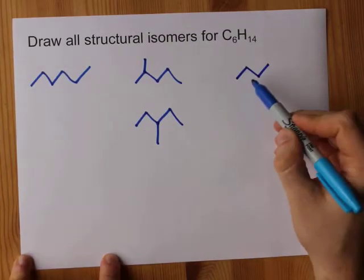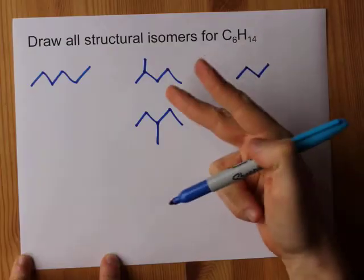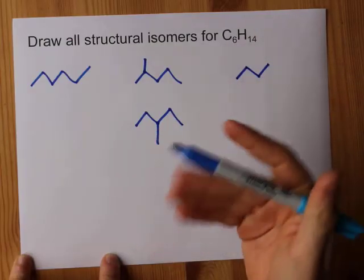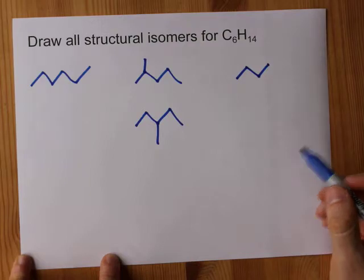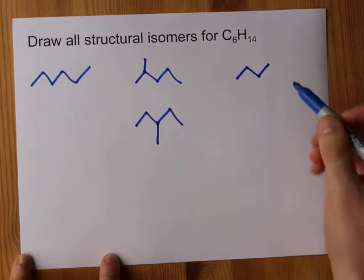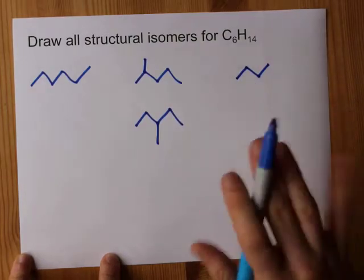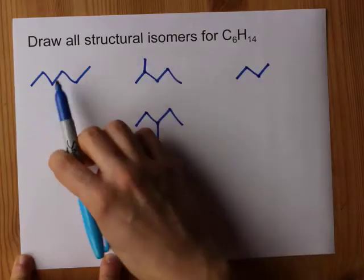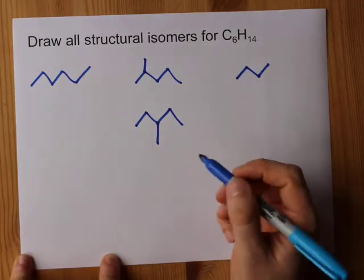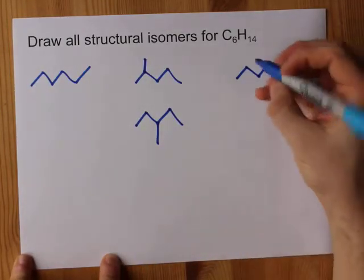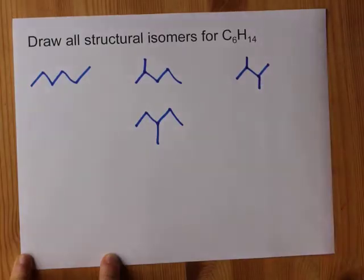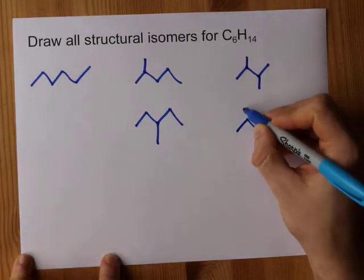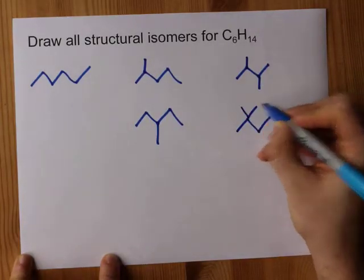What about my butanes, where I've chopped off two of the carbons? I still have two that I need to accommodate. The ends are no good because that gives me a pentane or even a hexane back. I could put one on each of the middles, or I could put both of them on one.